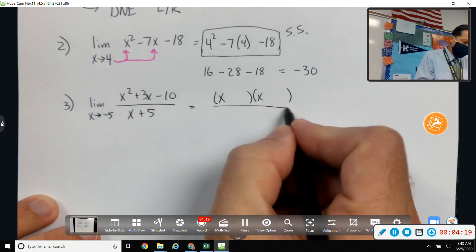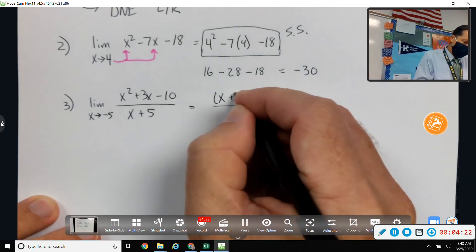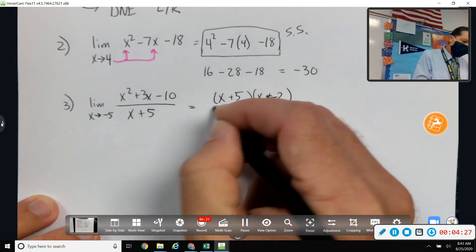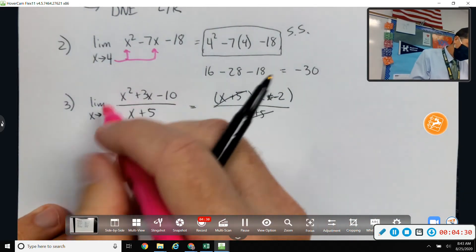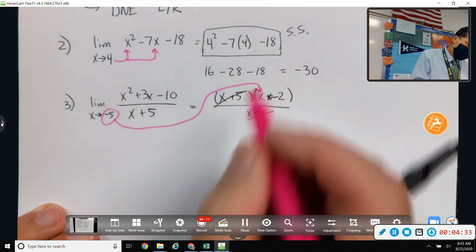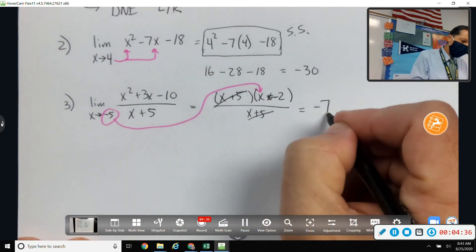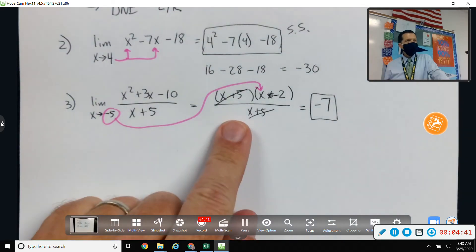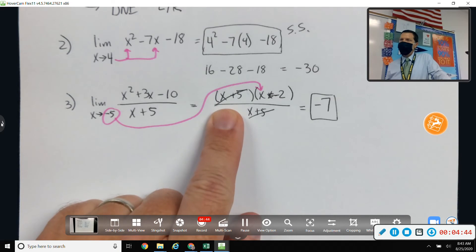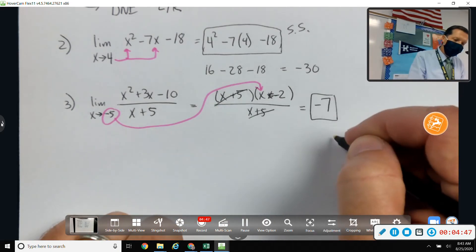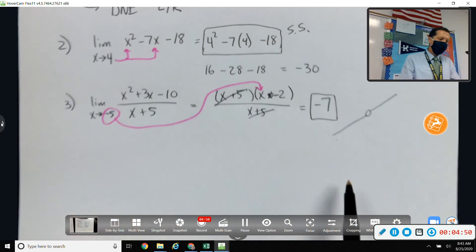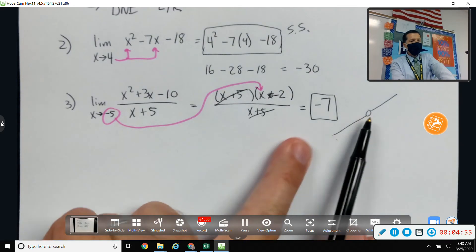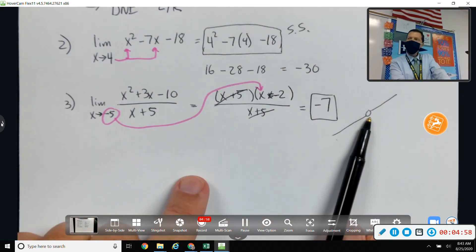It's probably going to have an x plus 5 in it so that it will cancel. x plus 5 and x minus 2. So, the x plus 5s cancel. Now, I can try my substitution. Negative 5 minus 2 would be negative 7. That means, if we think about the graph, that there's a hole there because the factors cancel. So, I don't know what the graph looks like, but there's a hole at negative 5, negative 7. When x is negative 5, there's a hole at y equals negative 7. So, the limit exists there, even though the function doesn't.